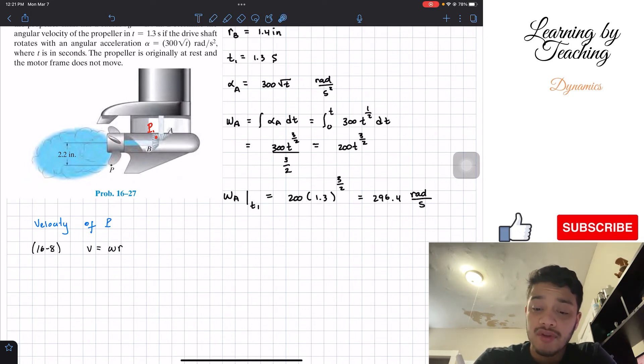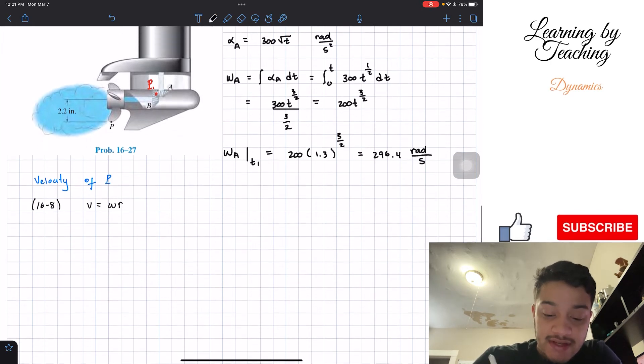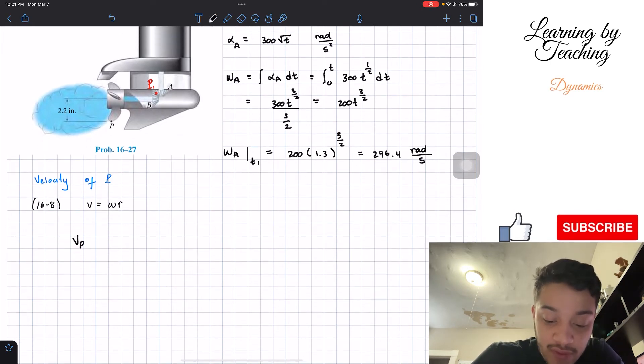However, this point touches both gear A and gear B. Therefore, what we can say is that the velocity of this point 1 is equal to the angular velocity of A times the radius of A. But at the same time, this point 1 velocity is equal to the angular velocity of B multiplied by the radius of B.